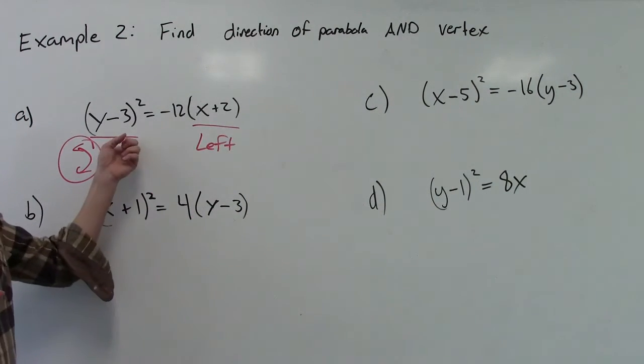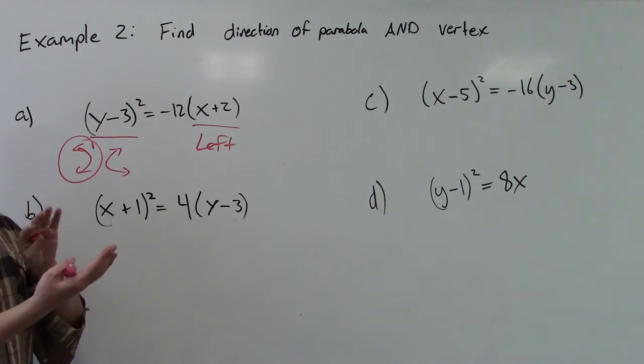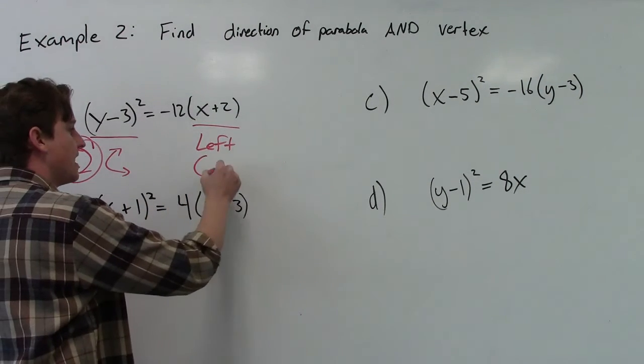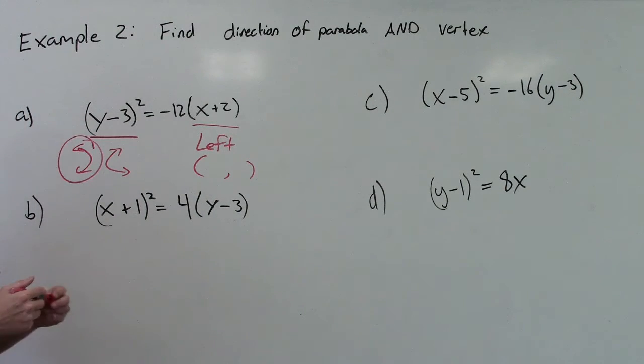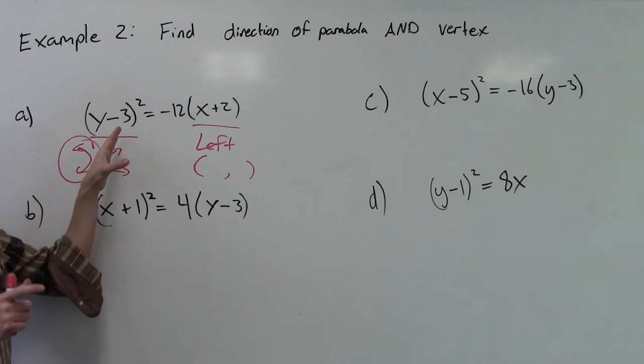We know it's either left or right because the y is squared. We know it has to be left because of that negative multiplier that's going to kind of reflect it. Okay, we also want to be able to find the vertex. Now this can be a little tricky if the y is on the left-hand side. It's not too bad. You just got to be careful.